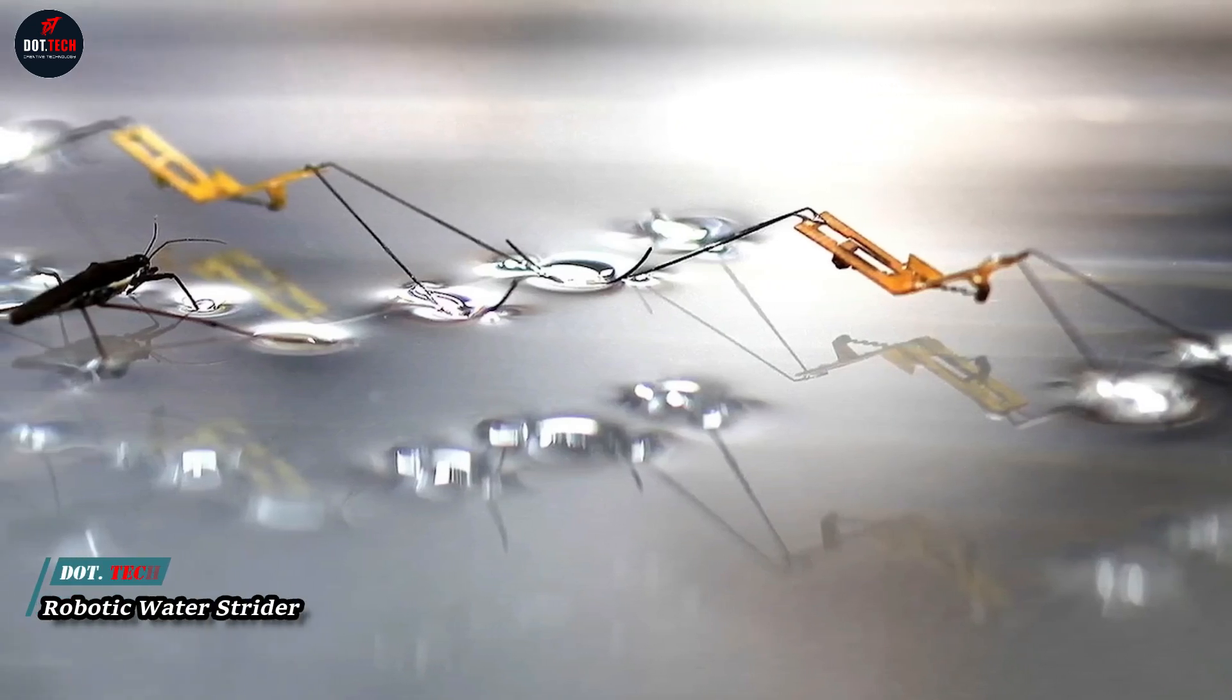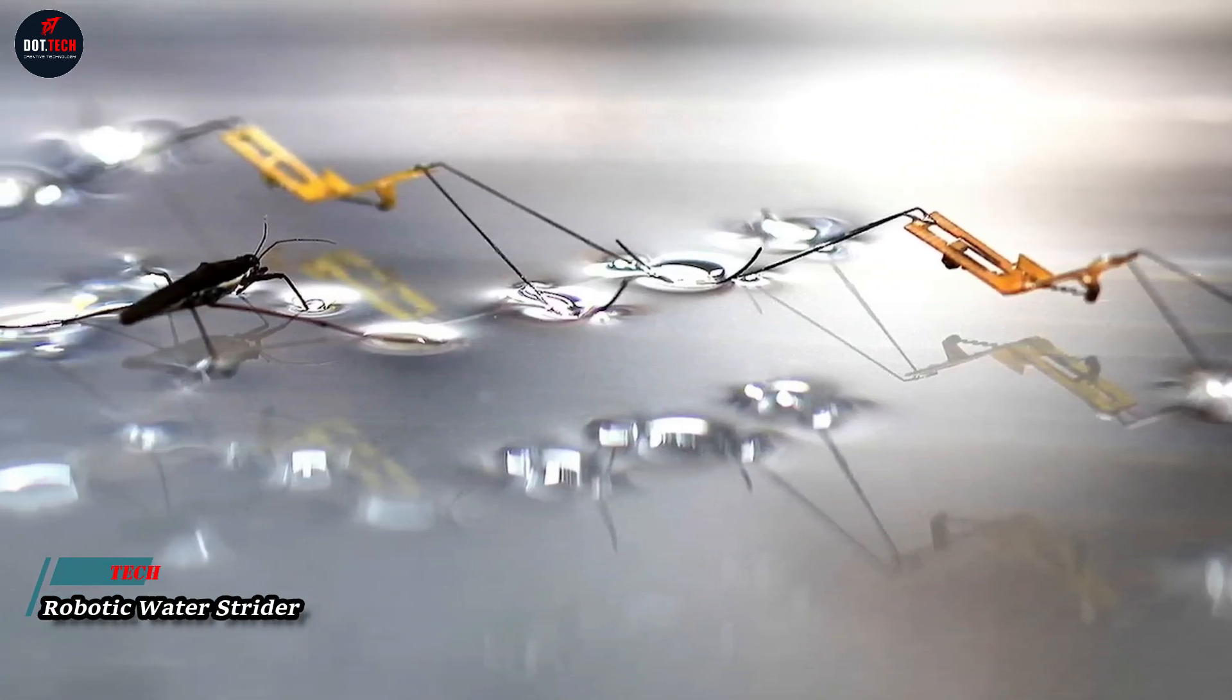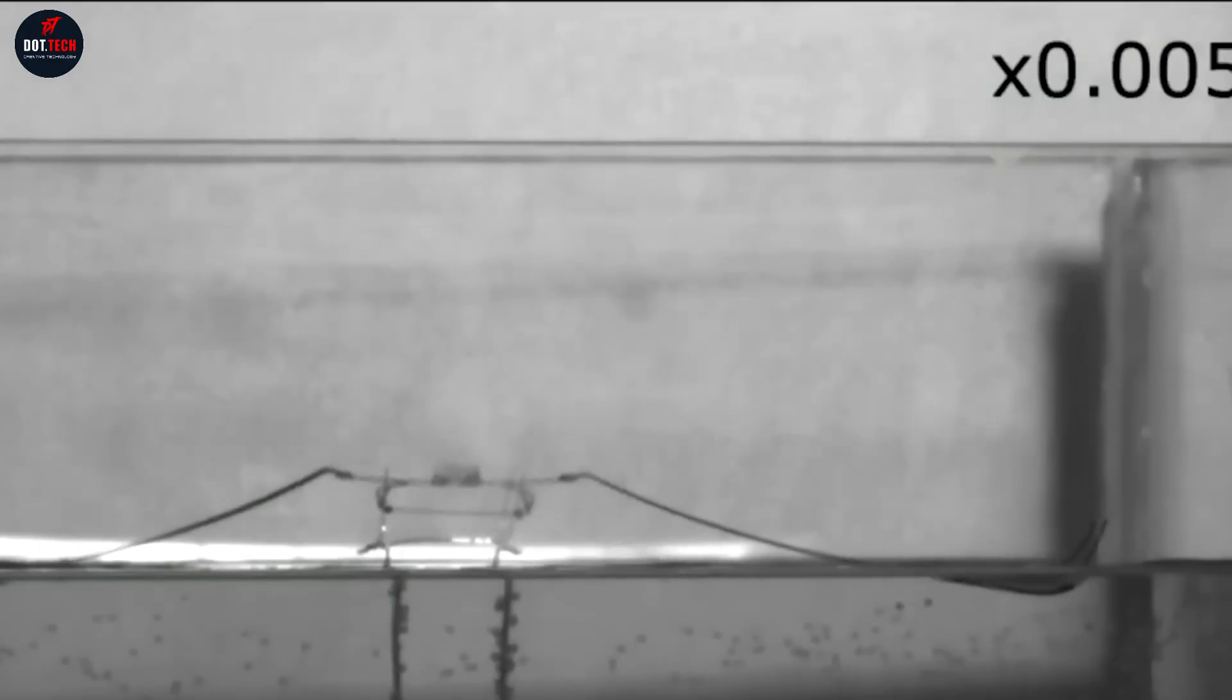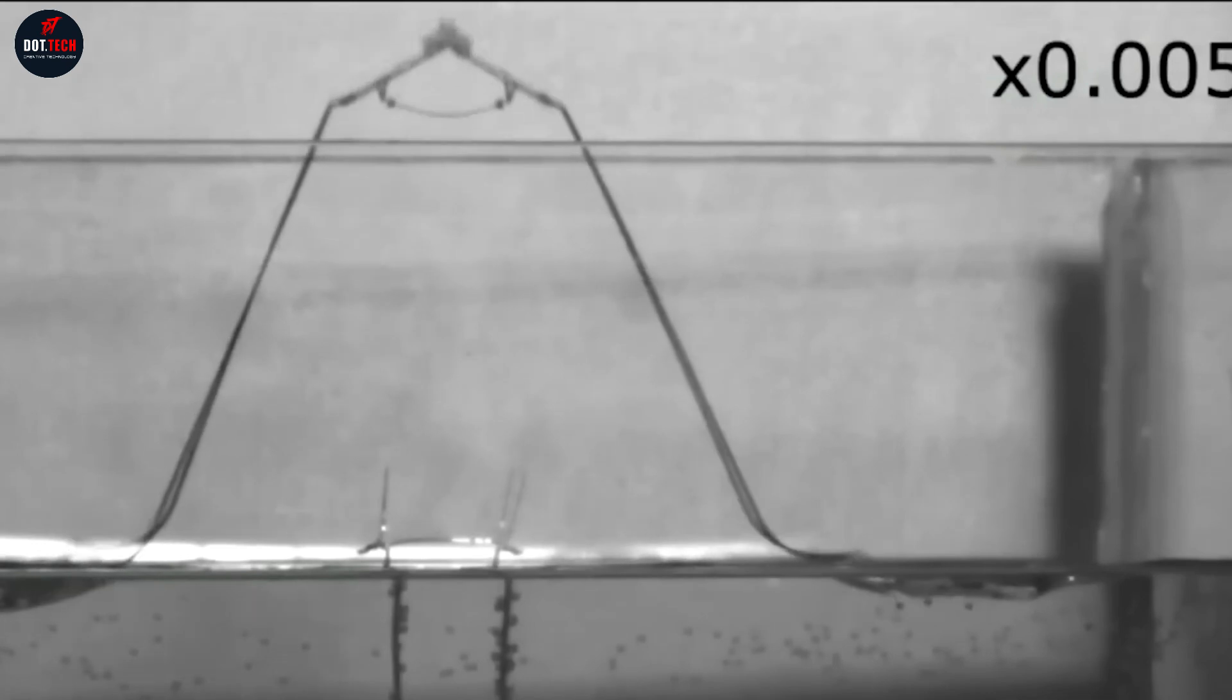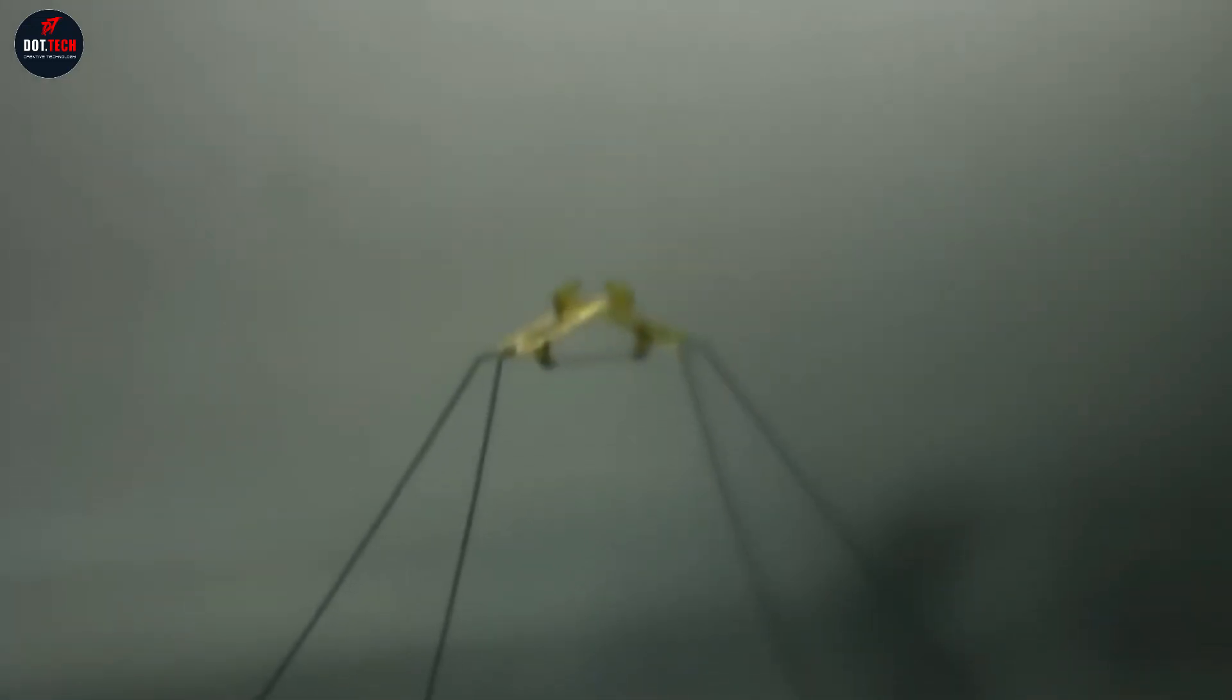Scientists from Harvard University have developed a unique robot called the Water Strider, which can hop on water. This device weighs less than one gram and moves on the water surface just as well as its living counterpart.